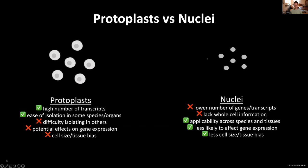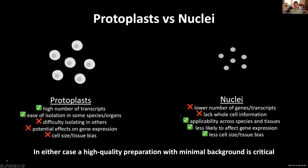Another alternative is to profile nuclei. Here we have a relatively lower number of genes or transcripts detected per nucleus and a lack of whole cell information, but we do see broader applicability across species and tissues. We also have a lower likelihood of affecting gene expression during preparation because it's relatively short and can be done on ice, and we see less cell size or tissue bias. In either case, it's really important that you're producing high quality cells or nuclei that have high RNA content and are not spewing RNA into the solution, which would cause high background in your assays.